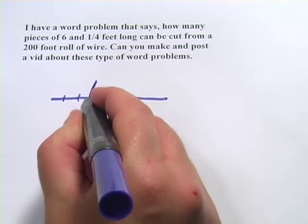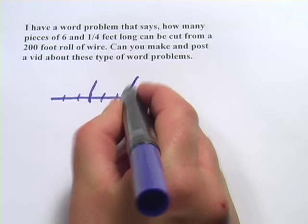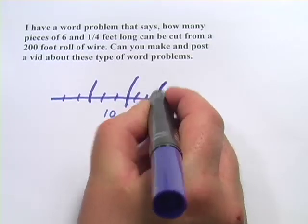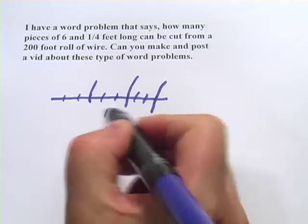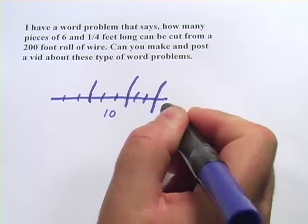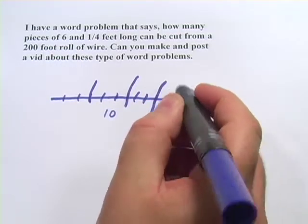You'd have one, two, three, there's a piece, one, two, three, there's a piece, one, two, three, there's a piece, and you'd have one little foot left over. Three pieces of three feet, three times three is nine, plus one left over, so the answer to that one would be three.